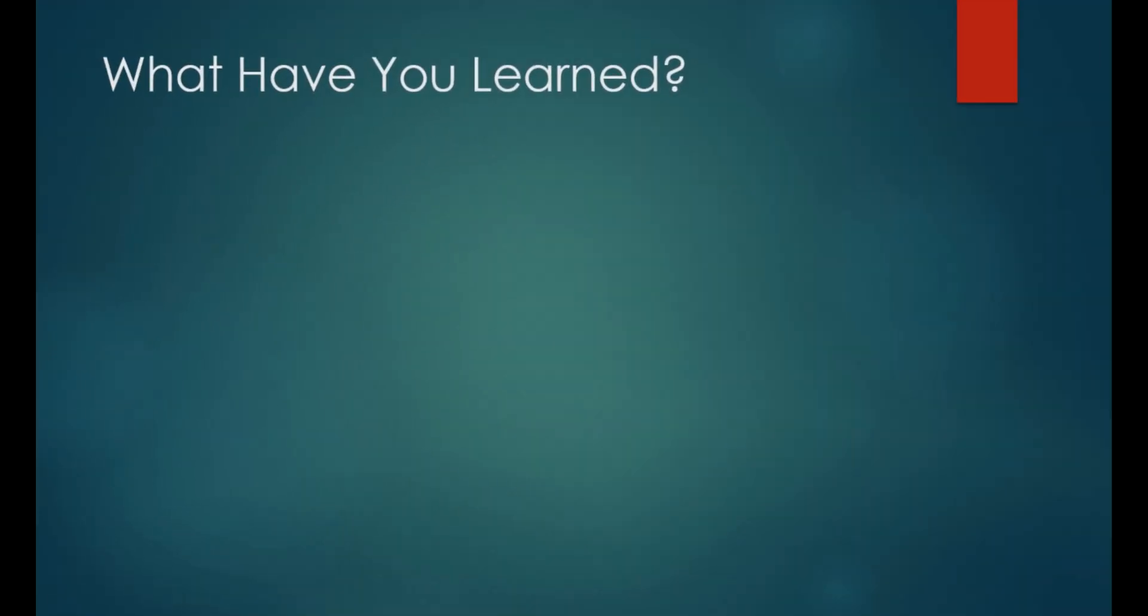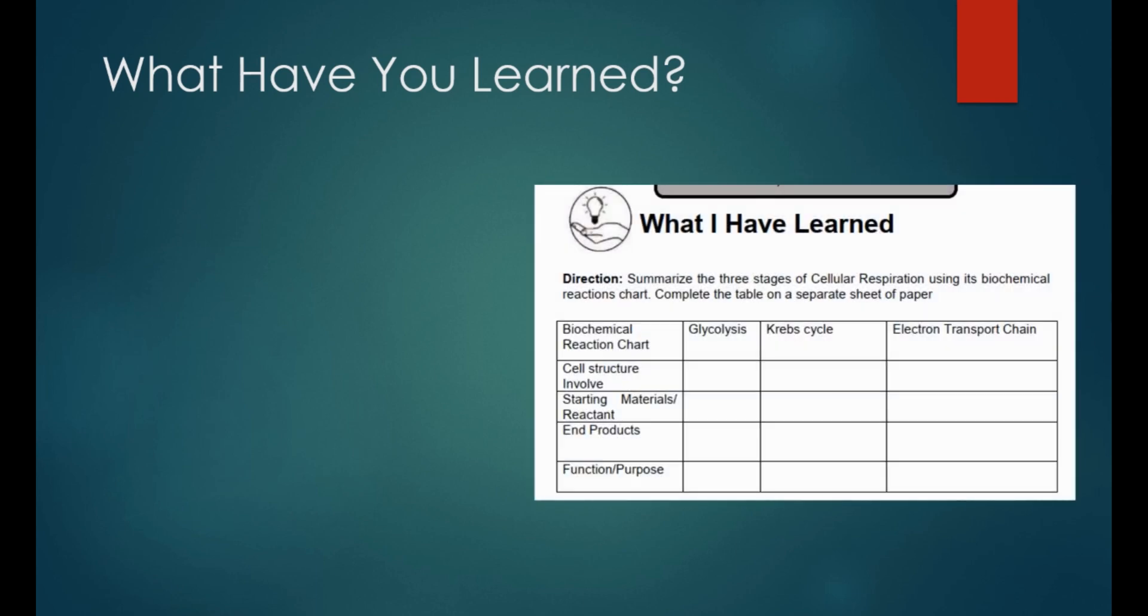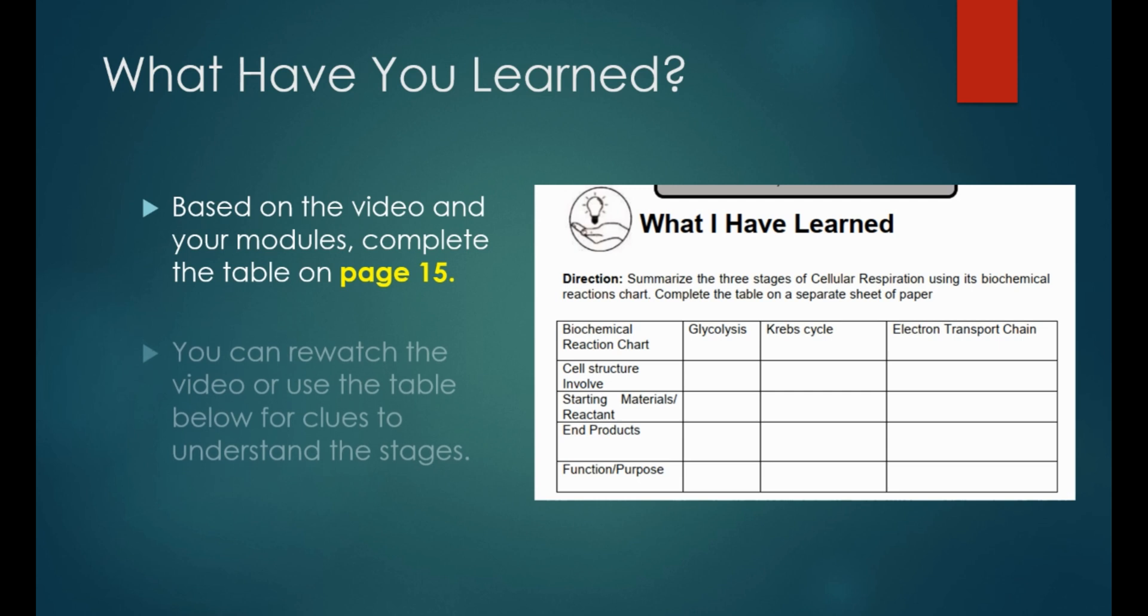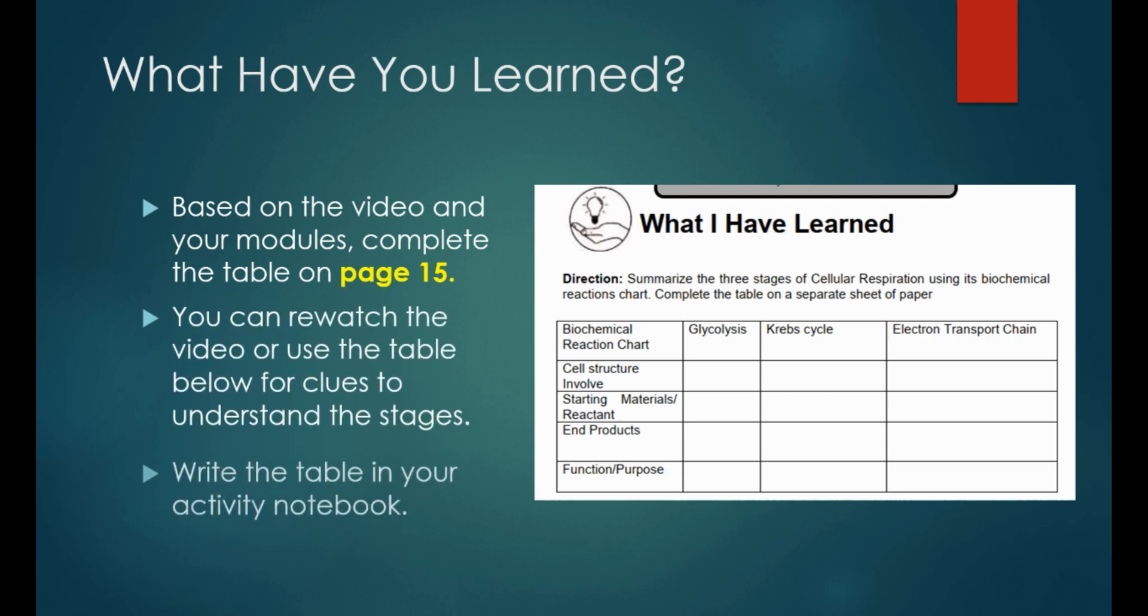Did you learn something about the stages of cellular respiration? Great! Let's see what you've learned by answering page 15. What have I learned? Summarize the three stages of cellular respiration using its biochemical reaction chart. Complete the table on your activity notebook. You can re-watch the video or use the table below for clues to understand the stages. Are you ready to answer? Good luck!